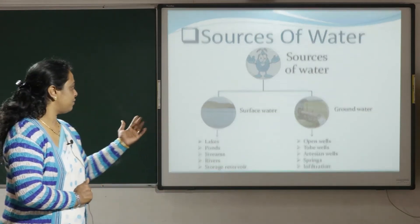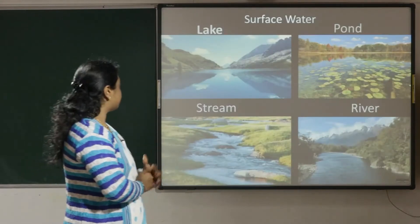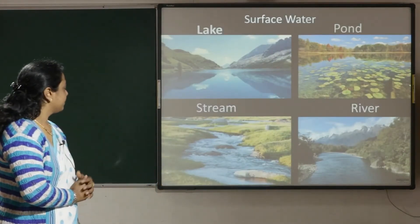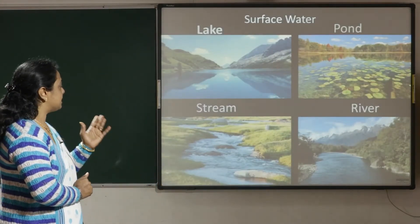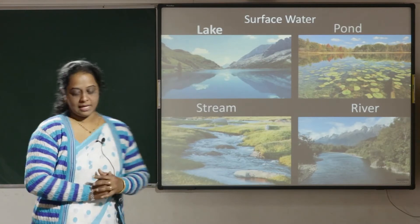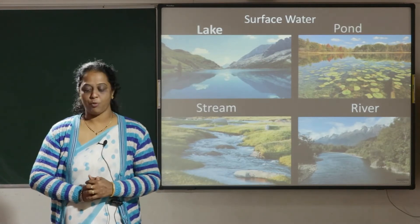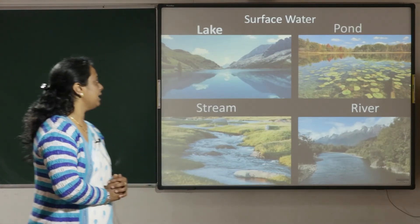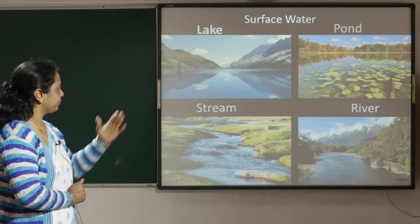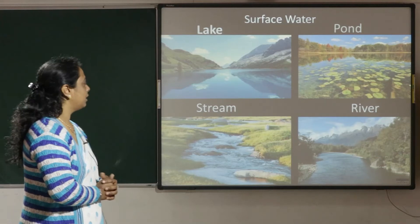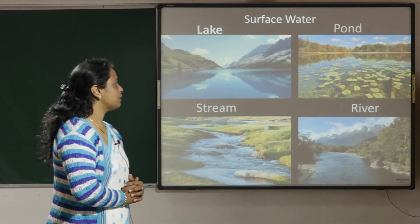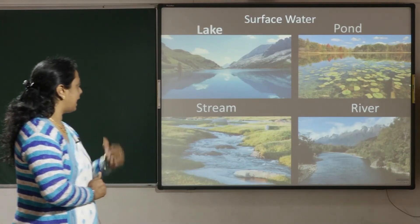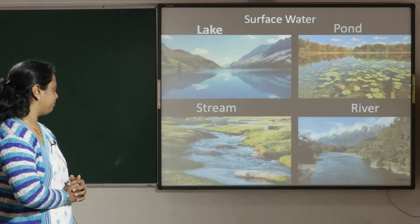Now let's look at the surface water. A lake is a large body of water surrounded by land. A pond is a body of water which is smaller than a lake.